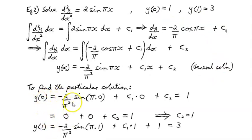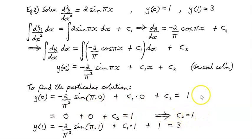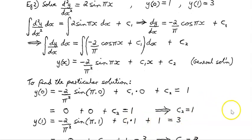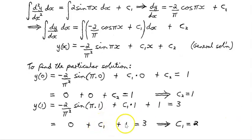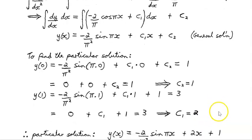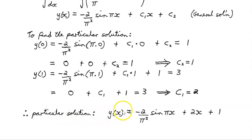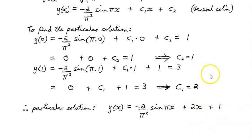y(0) = −(2/π²) sin(0) + c1·0 + c2 = 1. Since sin(0) = 0 and c1·0 = 0, we get c2 = 1. Next, substituting x = 1: −(2/π²) sin(π) + c1 + 1 = 3. Since sin(π) = 0, we get c1 + 1 = 3, so c1 = 2. The particular solution is y(x) = −(2/π²) sin(πx) + 2x + 1.